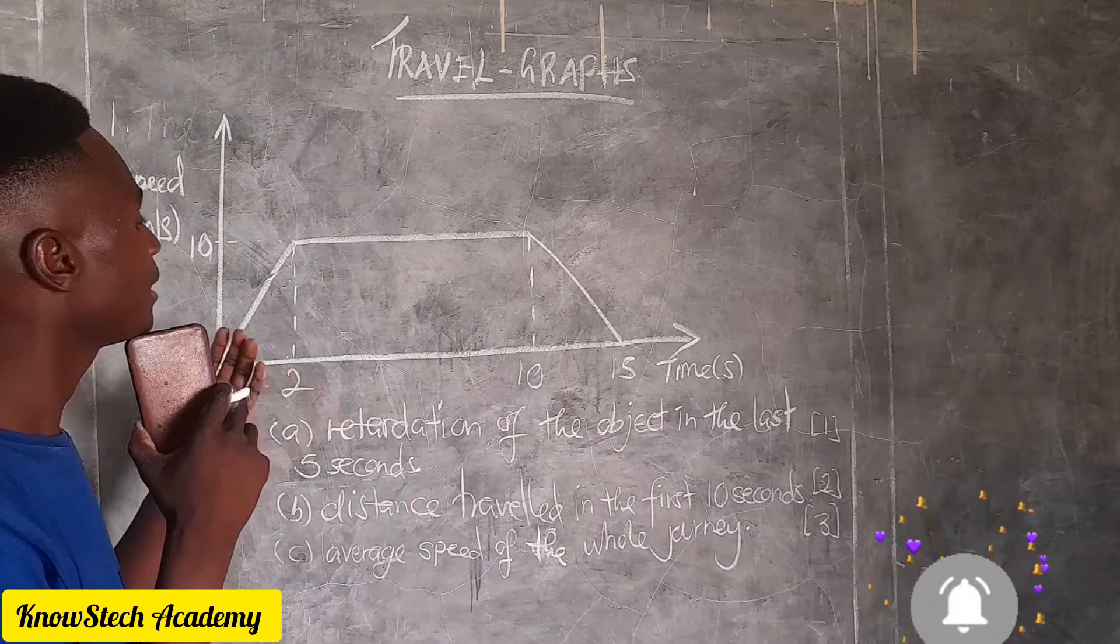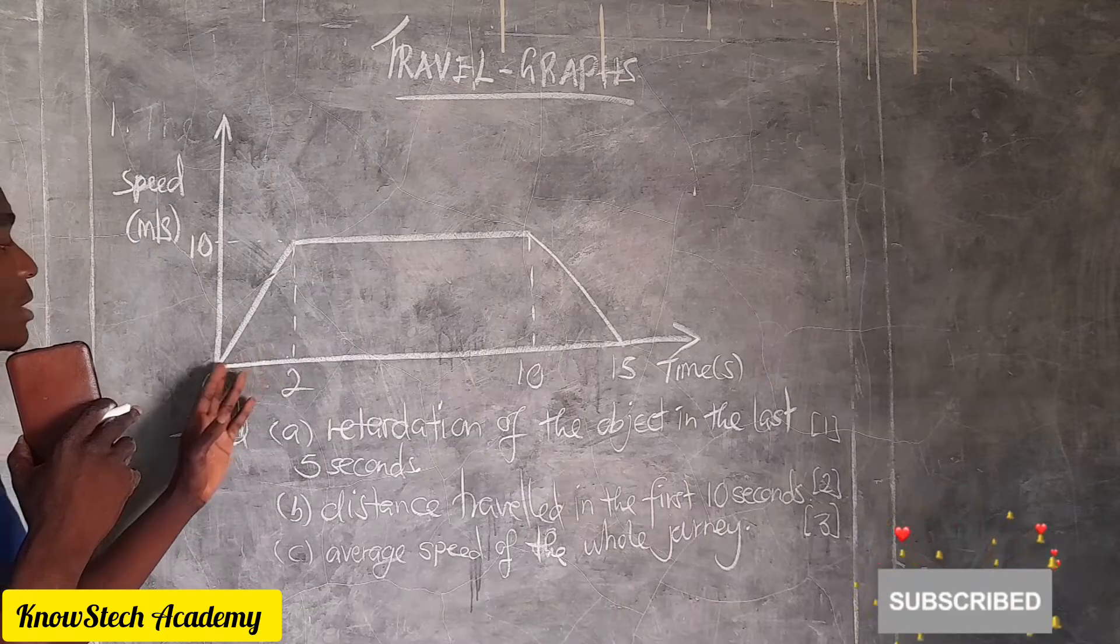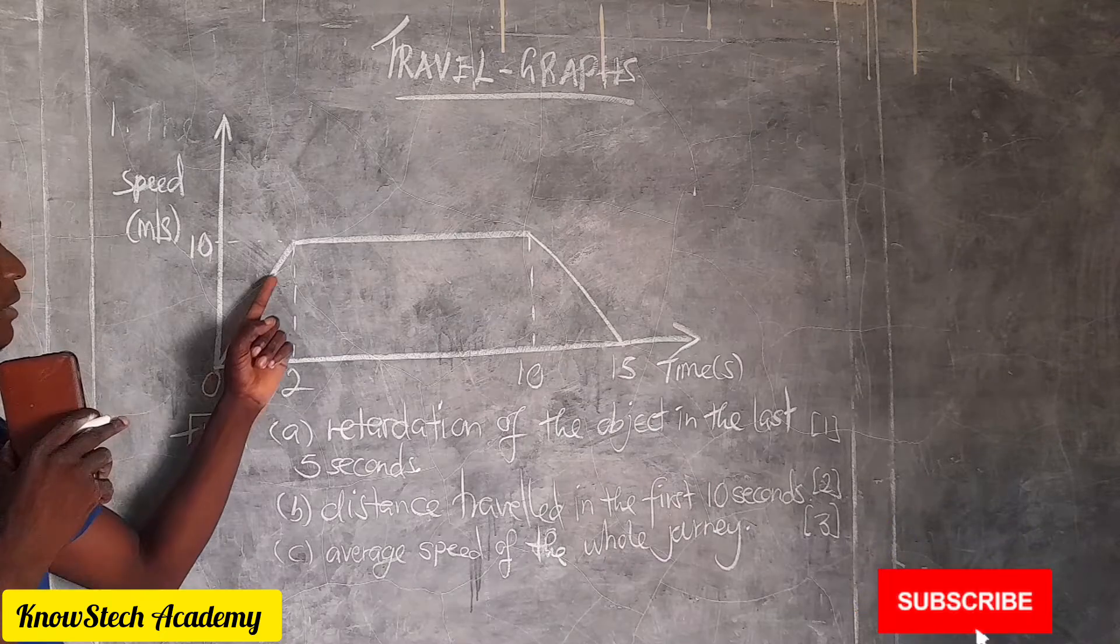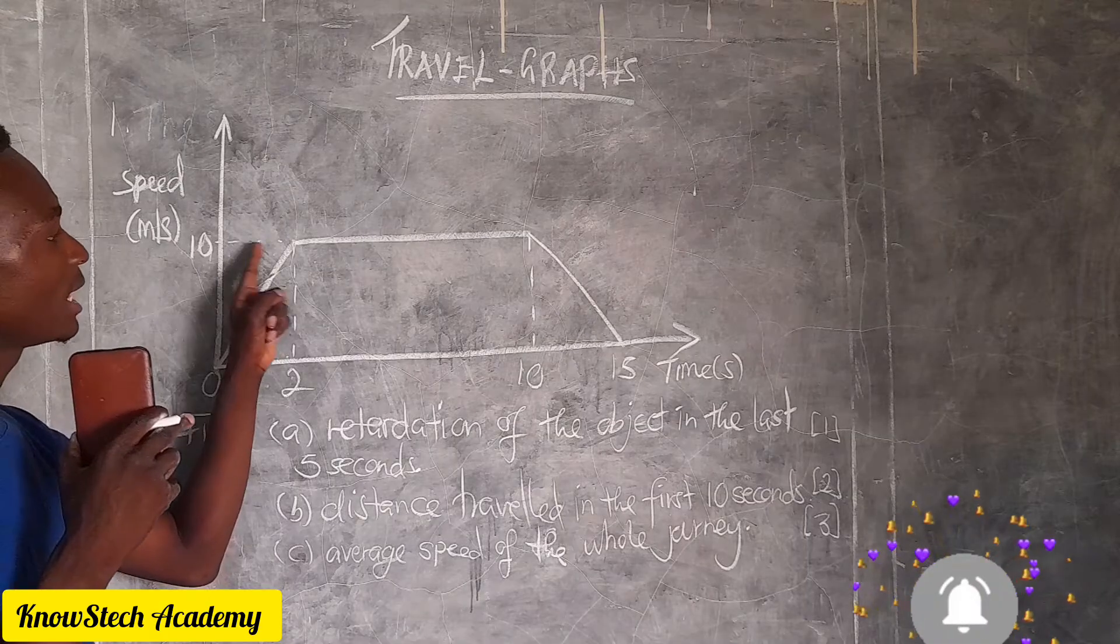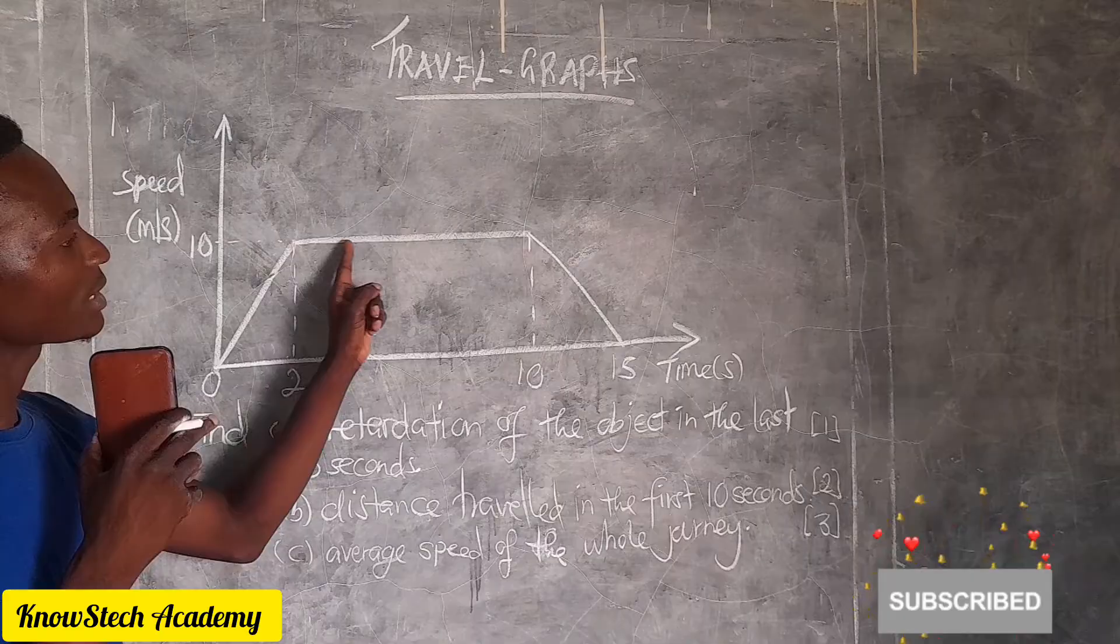This is the movement it shows. The movement of an object which accelerates uniformly for two seconds until it reaches the speed of 10 meters per second, then it moves at this constant speed.